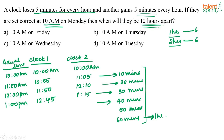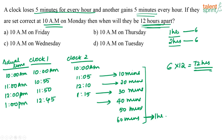For every 6 hours, the difference increases by 1 hour. To reach a 12-hour difference: 6 × 12 = 72 hours. After 72 hours, the clocks will be 12 hours apart. 72 hours equals 3 days, so Monday at 10 AM + 3 days = Thursday at 10 AM. The clocks will be 12 hours apart on Thursday at 10 AM. The correct answer is option B: 10 AM on Thursday.